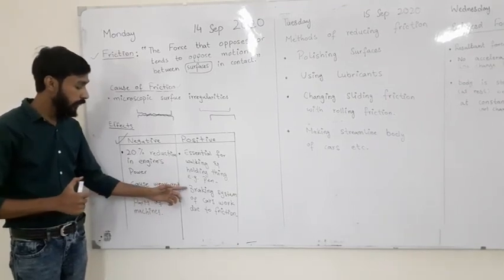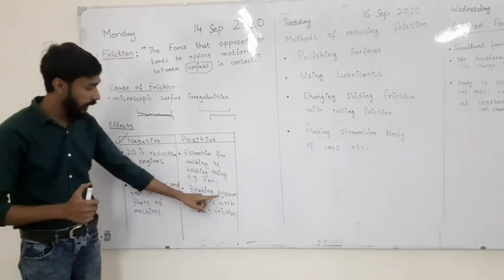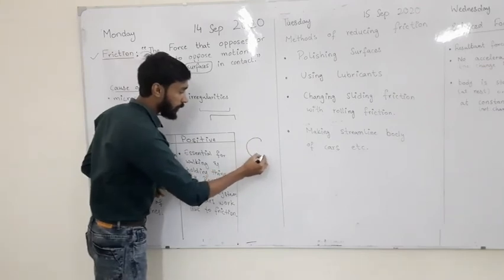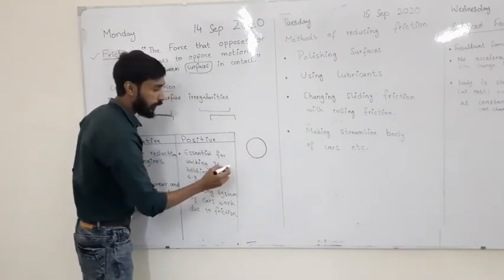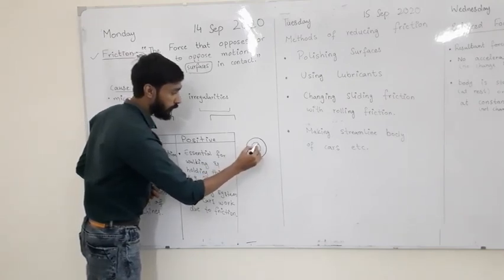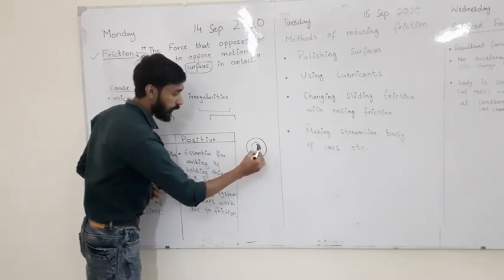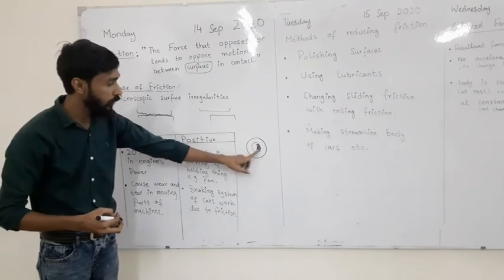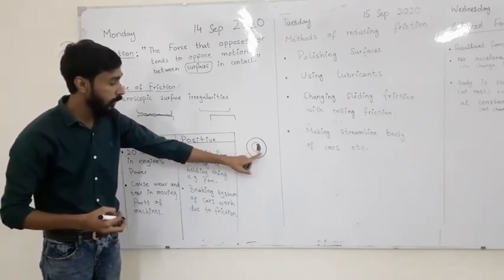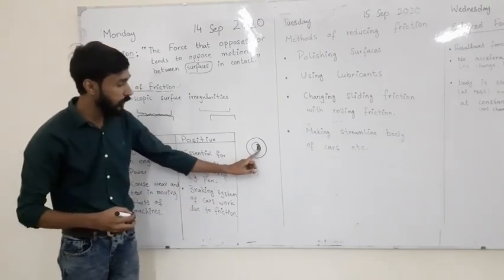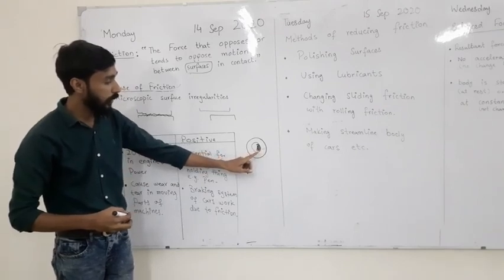Another positive effect of friction is the braking system of cars. When you apply the brake, the brake shoe gets attached to the rim of the tire. The friction between the brake shoe and the tire stops the car. This is how the braking system works. If there is no friction between the brake shoe and the tire, the car won't stop.